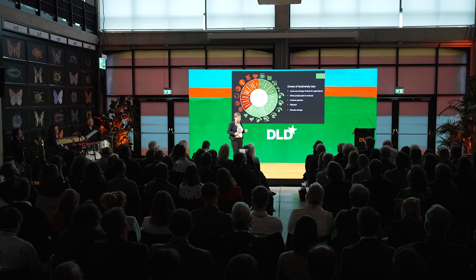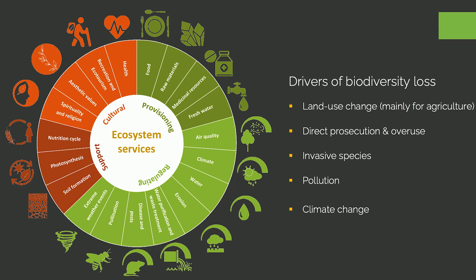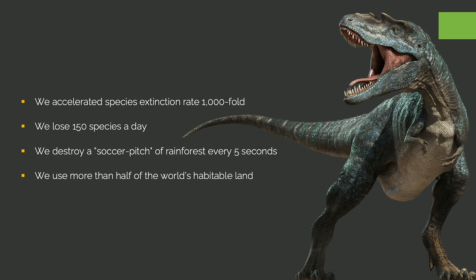Despite these facts, we harm them, and we harm biodiversity. Land use change — mainly for agriculture — direct persecution and overuse, invasive species, pollution, and climate change are the five main drivers for biodiversity loss. Maria already shared the collapse of genetic diversity when she mentioned the decrease of mammal and insect populations she experienced during her lifetime.